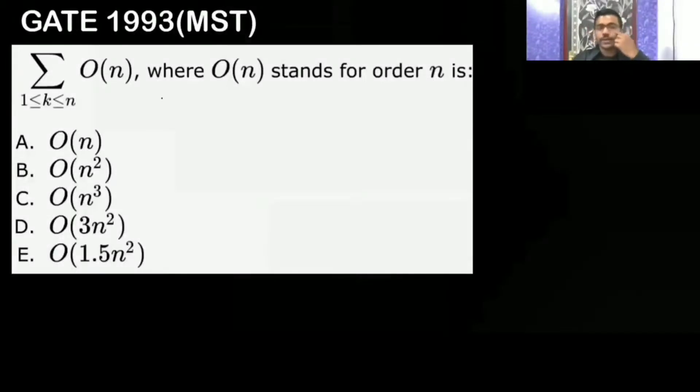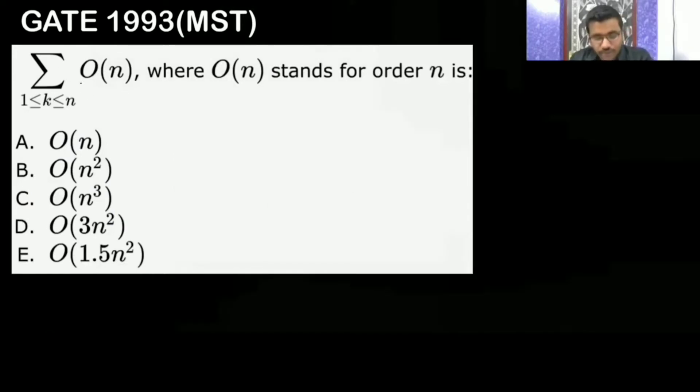Let's continue with our GATE last 33 years questions. The first question says that the summation where i goes from 1 to n of O(n), where O(n) stands for